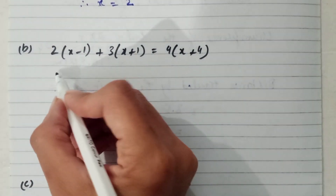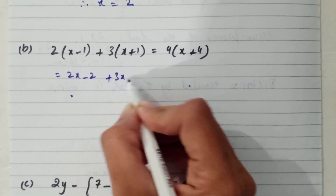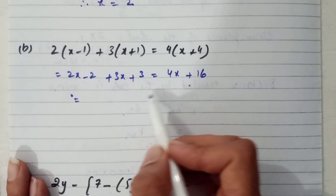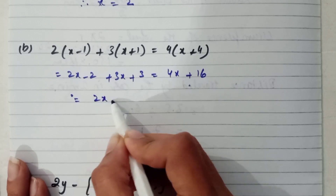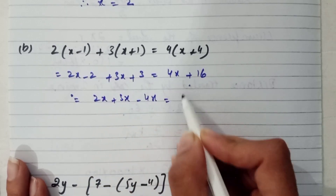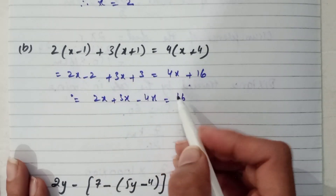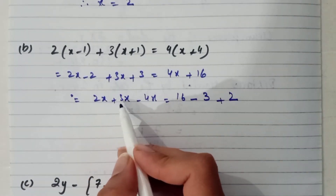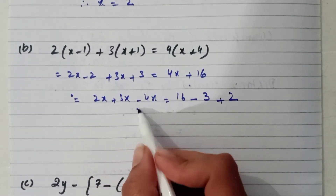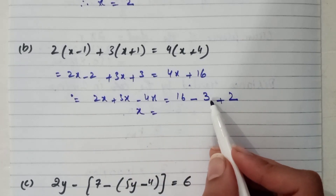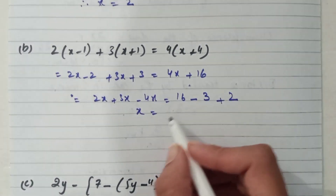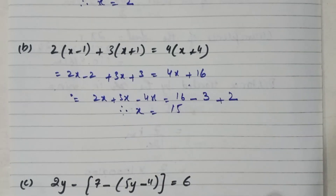Part b: first we multiply the equation by 2 and get 2x minus 2, 3x plus 3, and 4x plus 16. We bring 4x to that side, giving 2x plus 3x minus 4x equals 16. That is 5x minus 4x equals x, and 16 minus 3 gives 13, plus 2 gives 15. Therefore x is equal to 15 — that is the answer of part b.